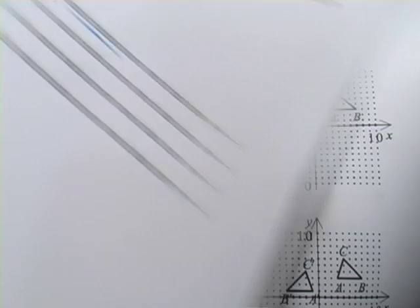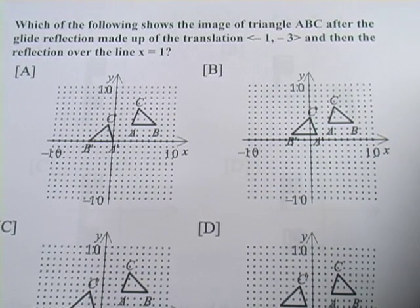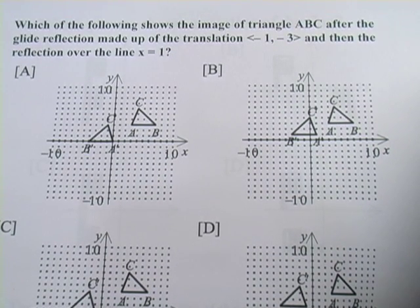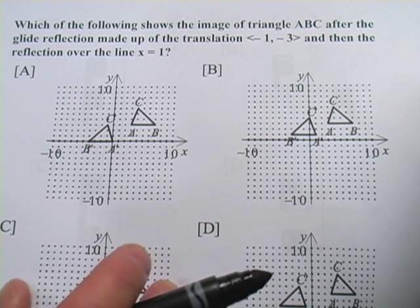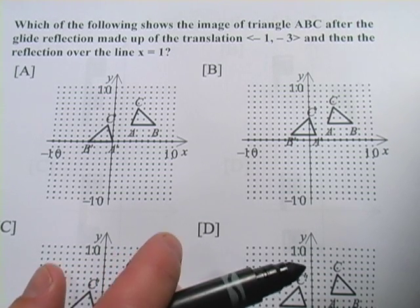Let's look at a couple more, or at least one more, like that. This one's pretty much the same, except we're dealing with triangles instead of L's. And they're giving us the translation and the reflection and asking us to pick which is the right before and after image that would go along with that.